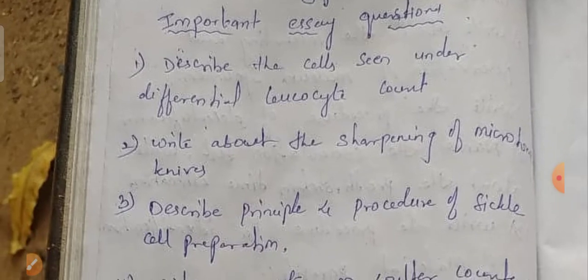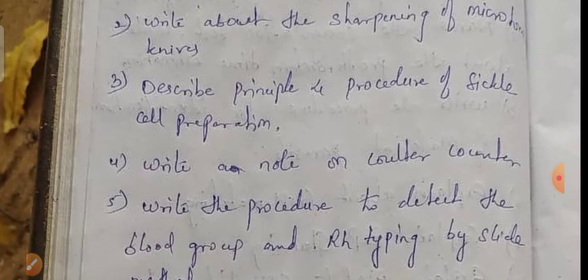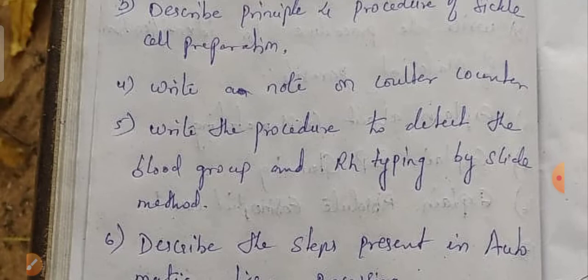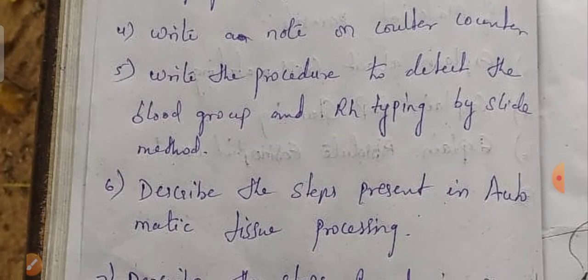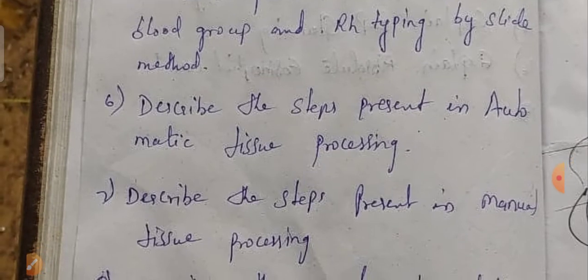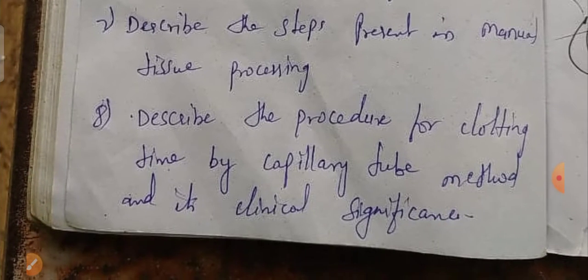So in pathology, important essay-type questions include: describe the cells seen under the differential leukocyte count; write about the sharpening of microtome knives; describe the principle and procedure of sickle cell preparation; write a note on culture counter; write the procedure to detect blood group and Rh typing by slide method; describe the steps in automatic tissue processing; describe the steps in manual tissue processing; describe the procedure for clotting time by capillary tube method and its clinical significance.